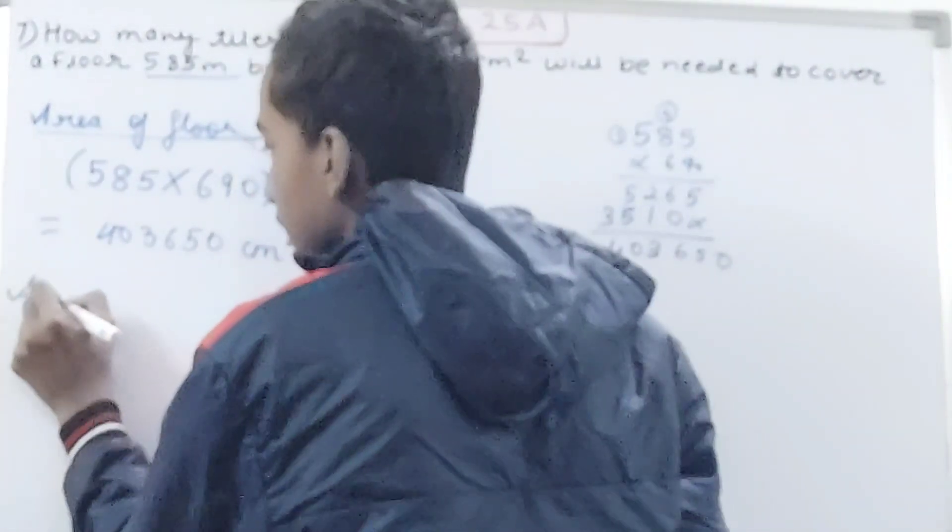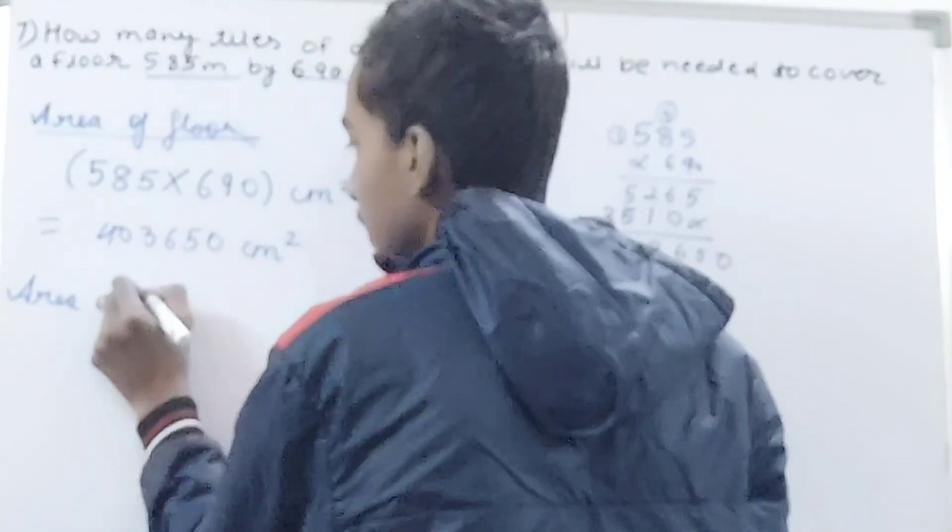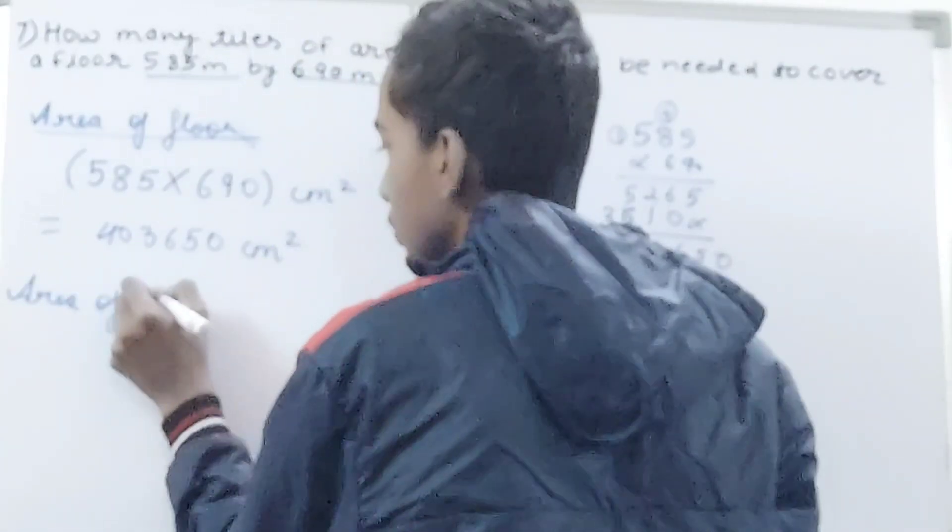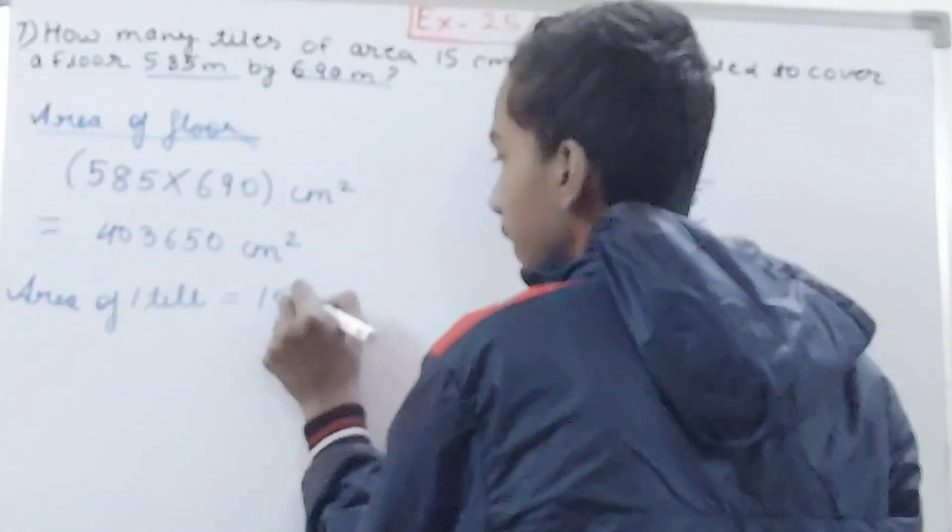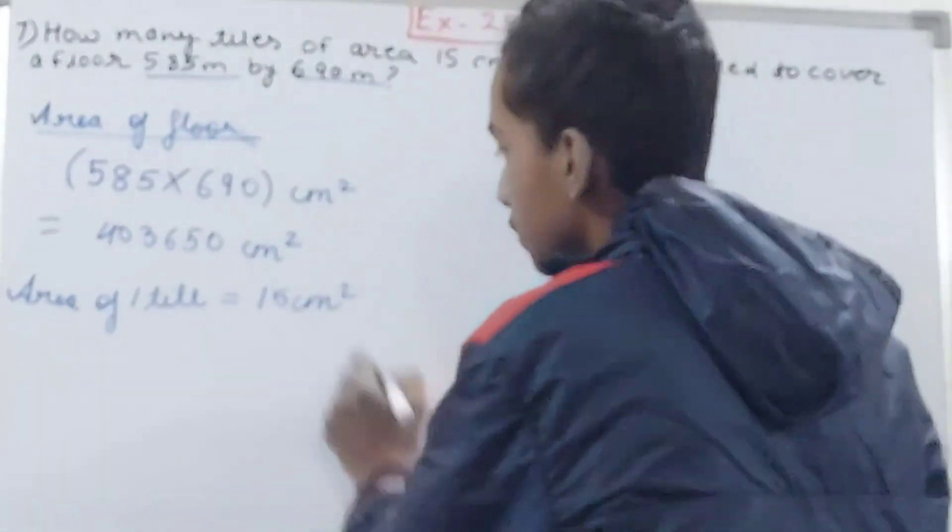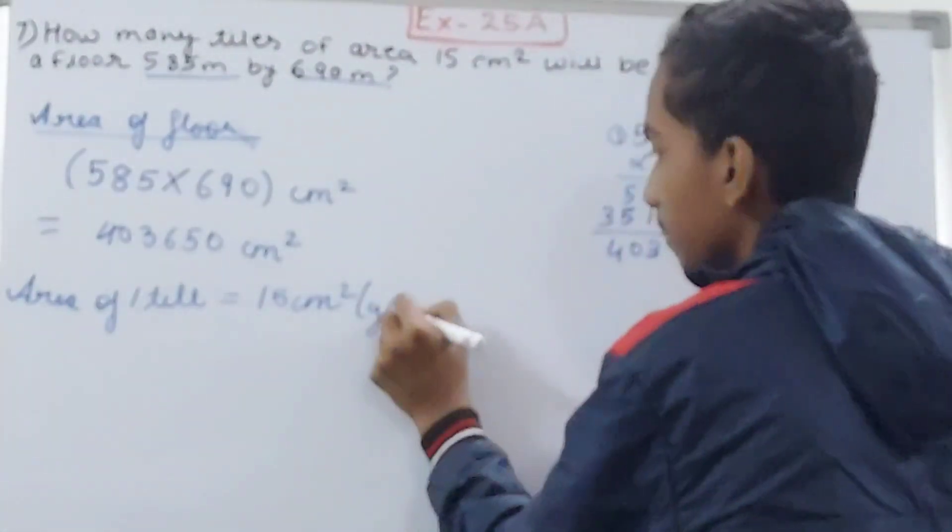And now area of one tile - that is given to us as 15 square centimeters. This is what is given, you can mention that also.